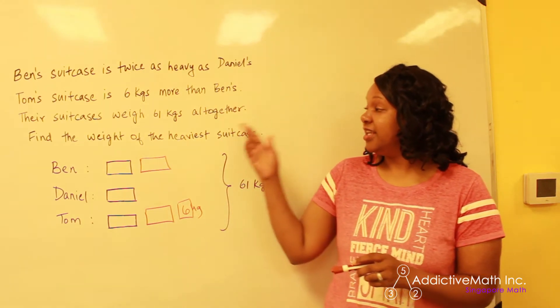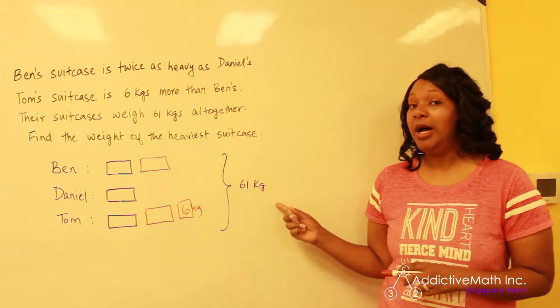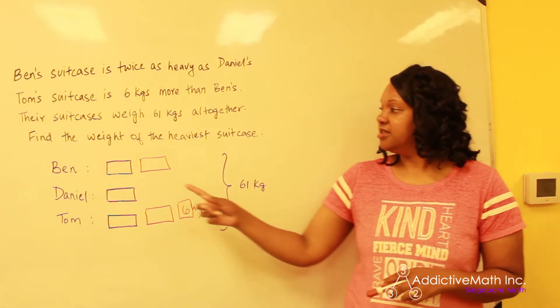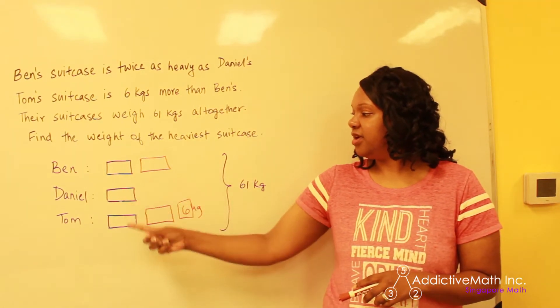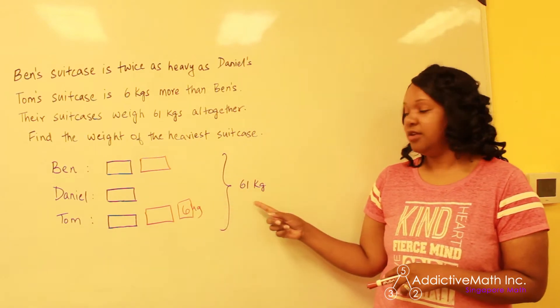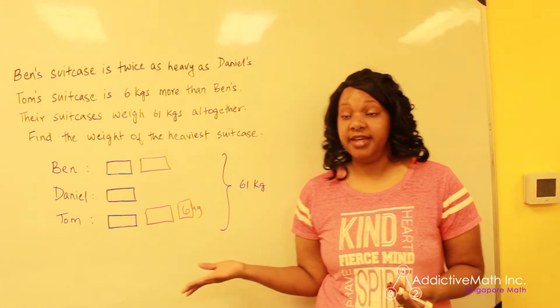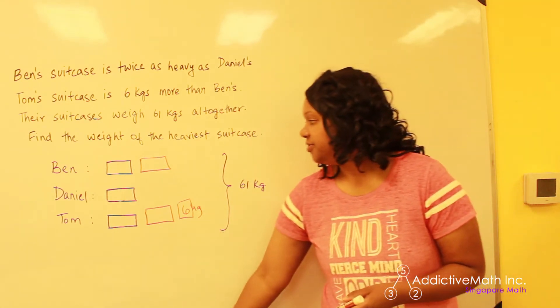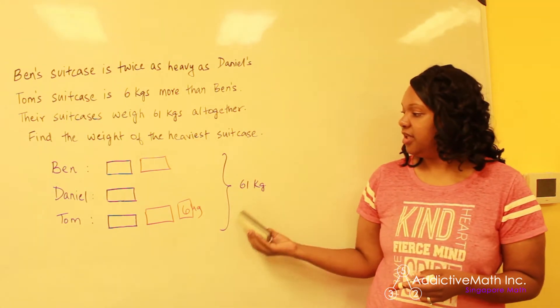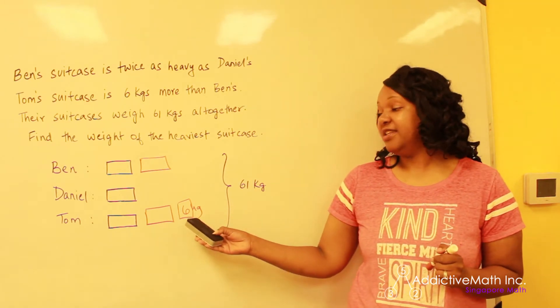Now their suitcases all together weigh 61. So that means his two bars, his one, his three should all equal 61. We need to find the weight of the heaviest suitcase. So what we will do here, we know the total and the only other number we have is a six.